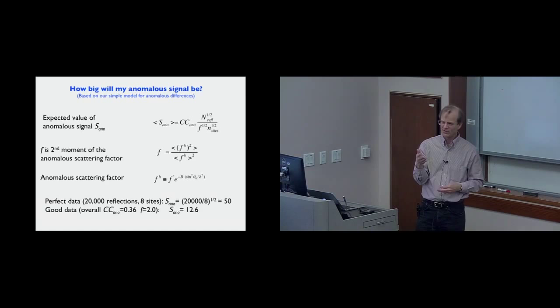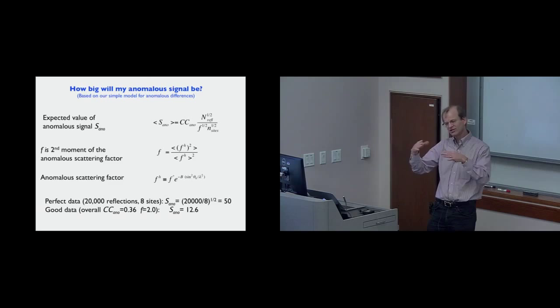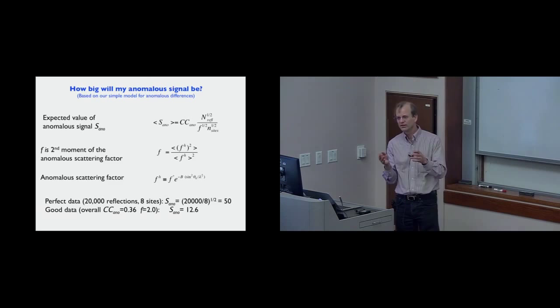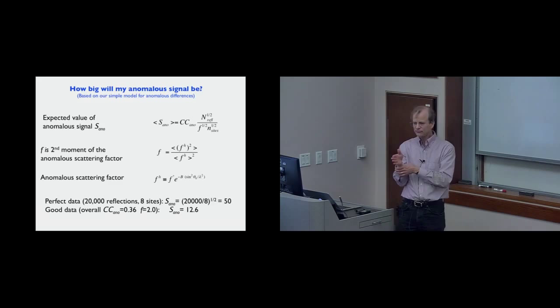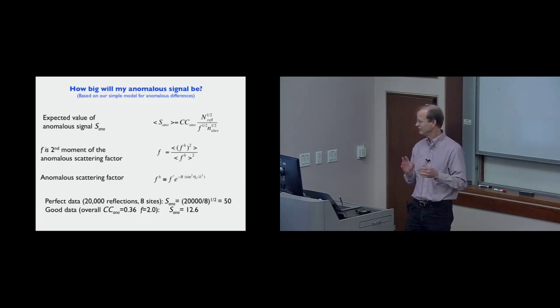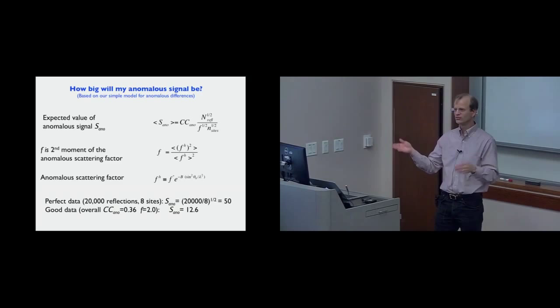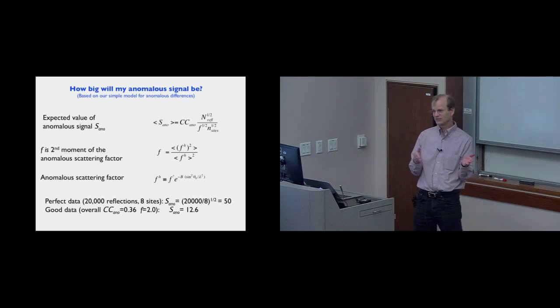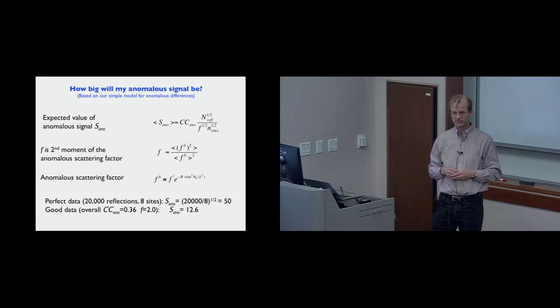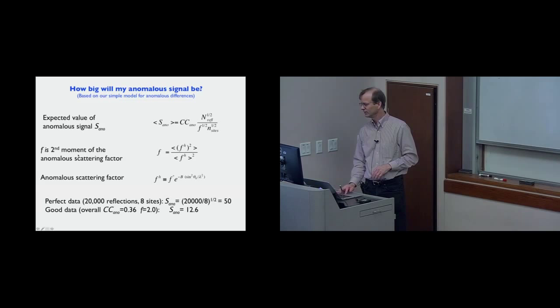If there are more reflections, each contributes a little bit more to the peak — the signal goes on the peak and the noise goes everywhere, which gives the square root dependence. For the number of sites, it's the exact opposite: if you have more sites, you're diluting your signal amongst more different sites, so the peak height in the anomalous difference Fourier is lower with more sites and higher with more reflections.